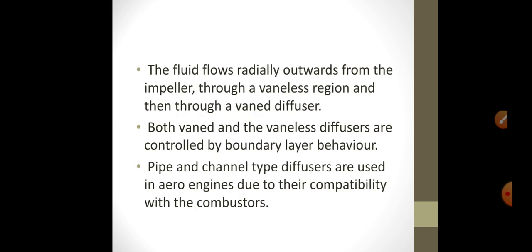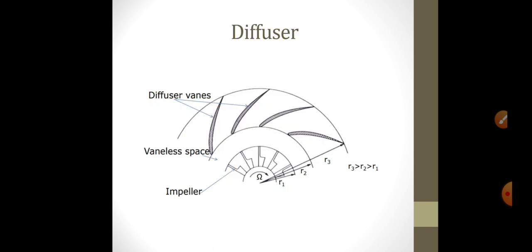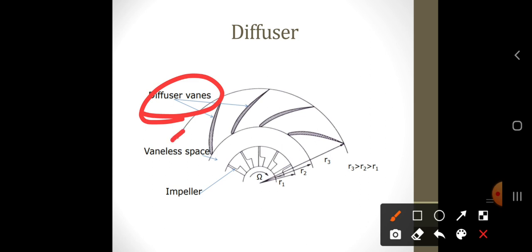The fluid flows radially outwards from the impeller through a vaneless region and then through a vaned diffuser. Both vaned and vaneless diffusers are controlled by boundary layer behavior. Pipe and channel type diffusers are used in aero engines due to their compatibility with the compressor. Here we can see a schematic diagram of a diffuser with an impeller, vaneless space, and diffuser vanes. R1 is the radius of impeller, R2 is the radius of vaneless space, and R3 is diffuser vanes. So R3 is greater than R2, which is greater than R1.